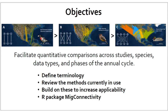The goal is to facilitate quantitative comparisons across studies, species, data types, and phases of the annual cycle of the strength of migratory connectivity. A comparable measure needs to be independent of species, range size, and data type, and must account for relative abundance and incorporate sampling error. We address those in this paper. We also define terminology, review methods currently in use, build on these methods to increase applicability, and put our work into an R package called MigConnectivity.